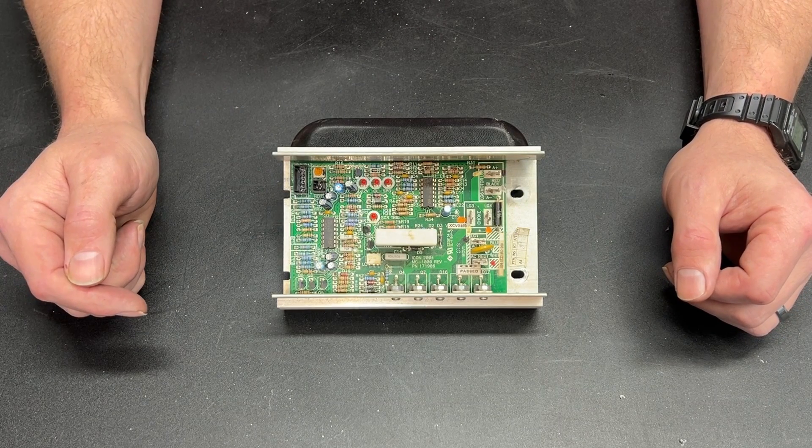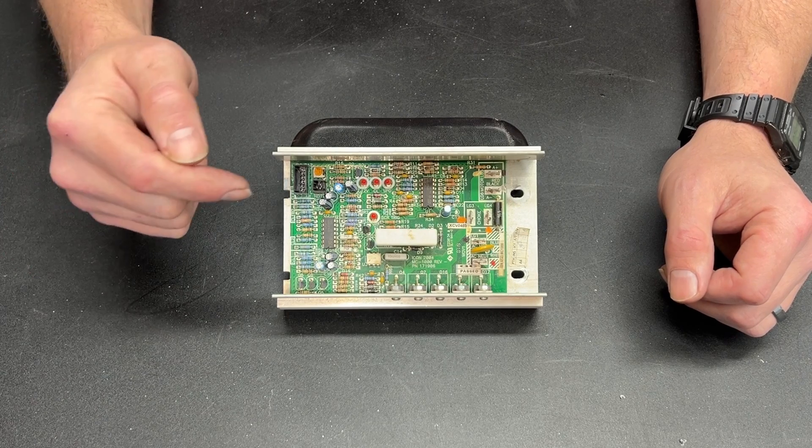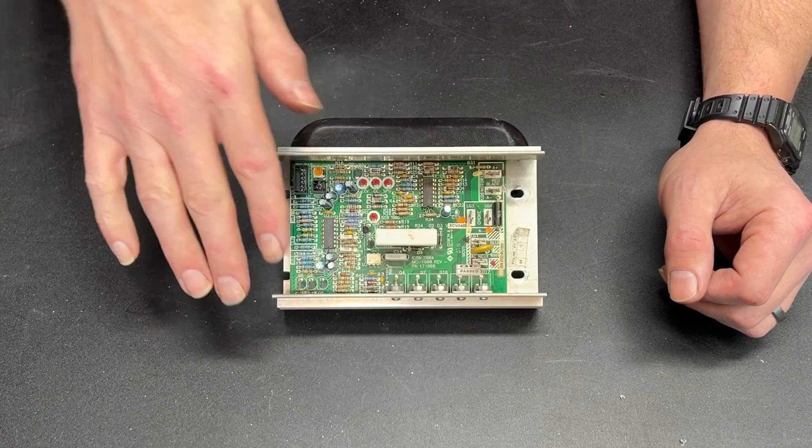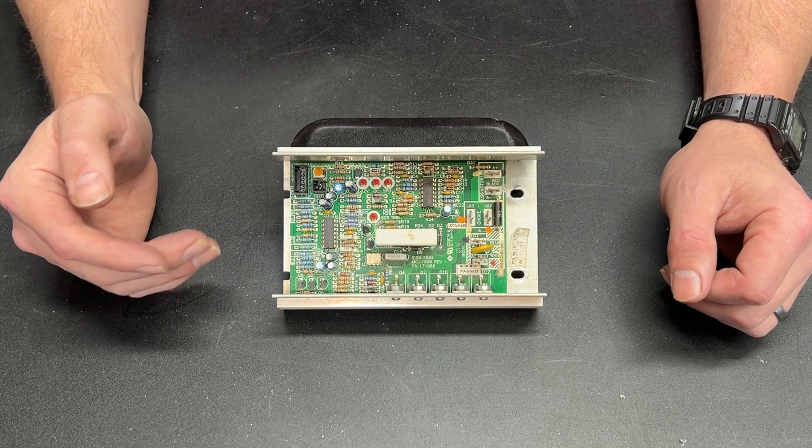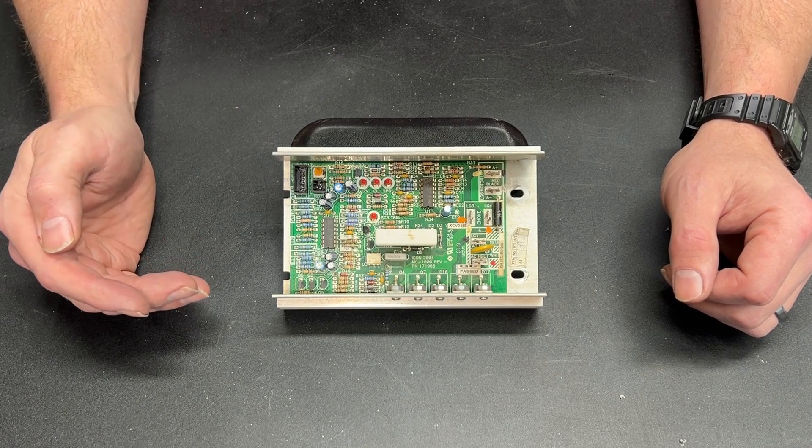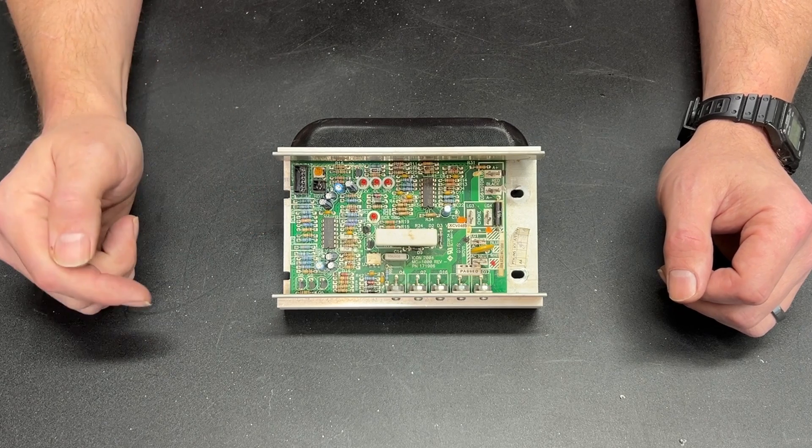This is an MC1000 treadmill motor control board. In this video I'm not only going to show you how to hack it so that you can use this to power a treadmill motor without the obnoxious treadmill control panel, but I'm also going to show you how I figured out how to hack it.